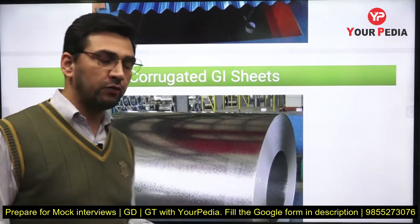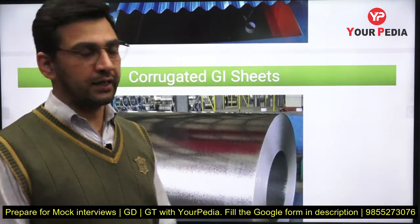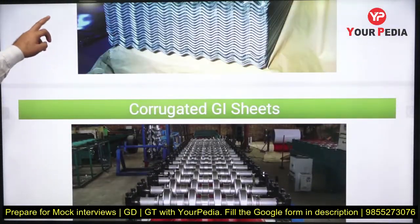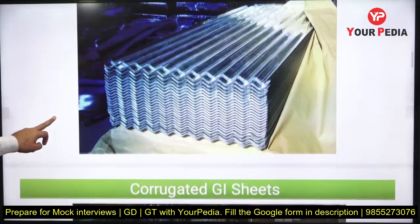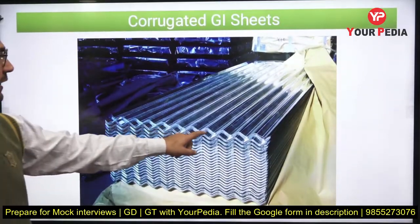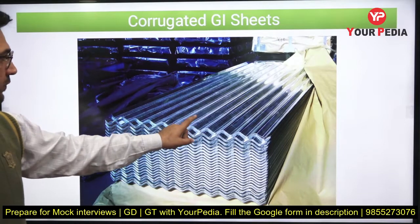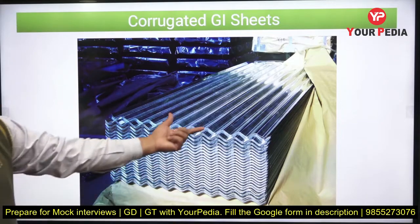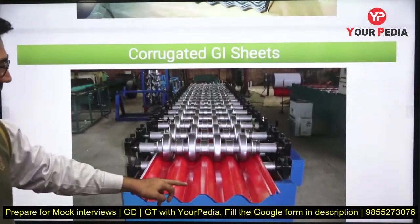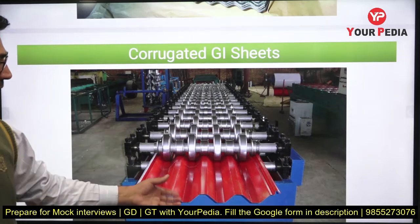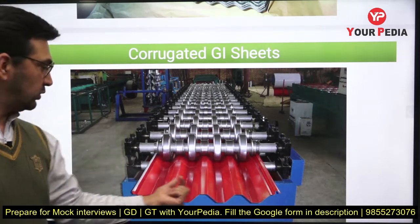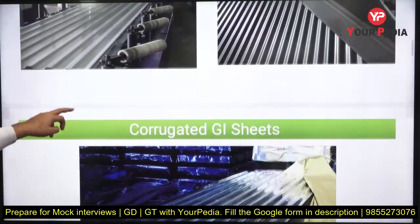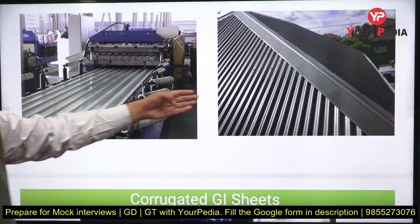If you simply cut this sheet and give it the corrugation shape, the sheet produced from this coil is called a corrugated galvanized iron sheet. If you have only zinc coating, it is corrugated GI. If you provide color, it is called PPGI — pre-painted galvanized iron. You can find different applications of these galvanized iron sheets.